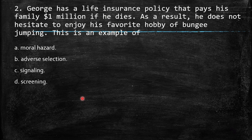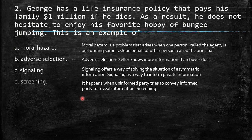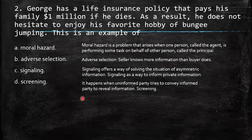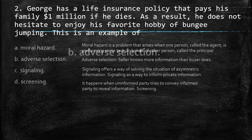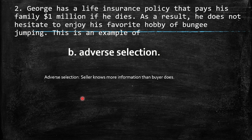Then George has a life insurance policy that pays his family. As a result, he does not hesitate to enjoy his favorite hobby of bungee jumping. This is again one of those four situations. Remember it's really hard for the provider — the company — to have all the information regarding the insurer because they don't reveal information. As with the previous question, this should be a problem of adverse selection, because the buyer has naturally more information about that.